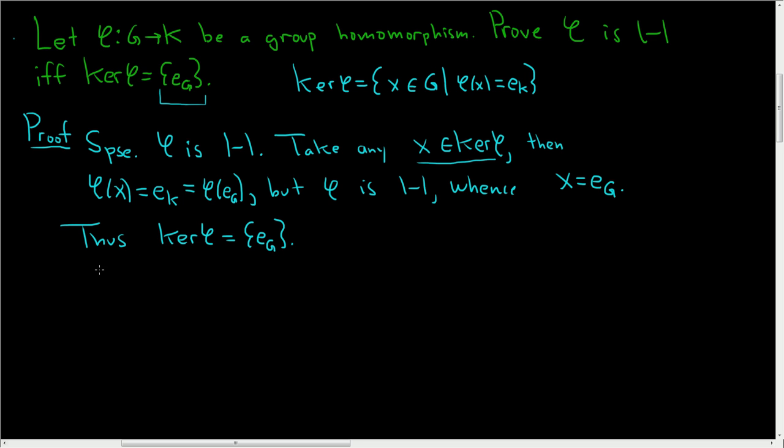Now let's suppose that the kernel of φ is equal to the set containing the identity. The claim is that φ is 1-to-1.